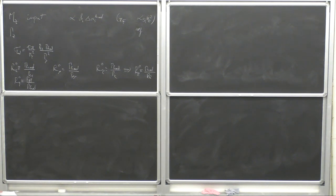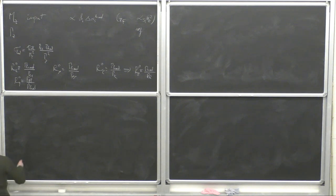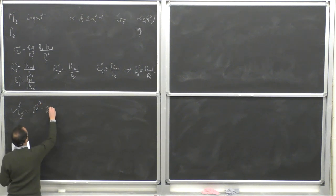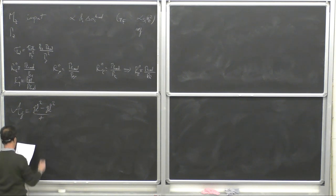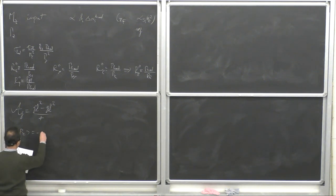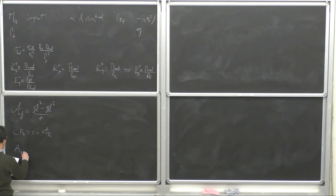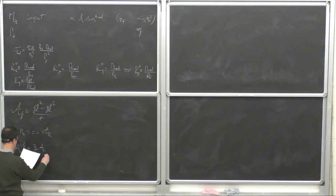Then there are the asymmetries. Depending on whether you have polarization or not, you can extract them in different ways. If we define A_f as (g²_Lf − g²_Rf)/(g²_Lf + g²_Rf), then using the tau polarization you can measure the average polarization of the tau, which is nothing but −A_τ. From the forward-backward asymmetries for a given fermion you can extract (3/4) A_e A_f.